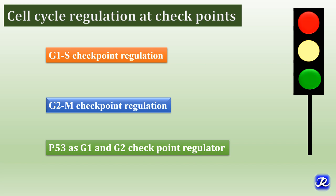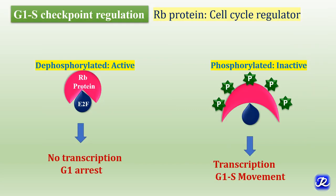Knowledge of cell cycle and its regulation is necessary for understanding many mechanisms involved in the development of cancer. At the end of this session, you should be able to describe cell cycle regulation at G1/S and G2/M checkpoints and the role of two tumor suppressor genes — retinoblastoma and P53 — in the regulation of cell cycle. Let's begin with cell cycle regulation at the G1/S checkpoint.